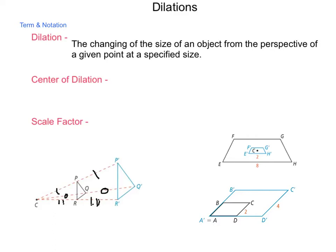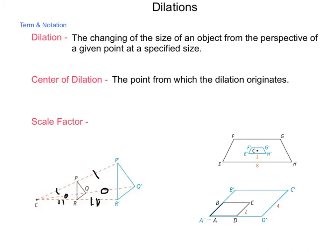The point that we choose to do our dilation from is the center of dilation. The size that we choose to enlarge or reduce the size of our original object is called the scale factor.